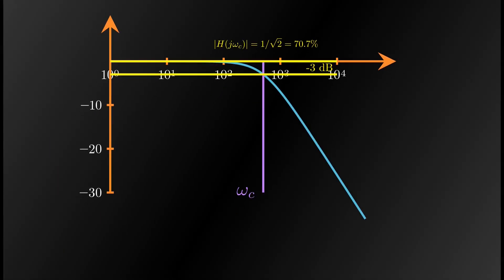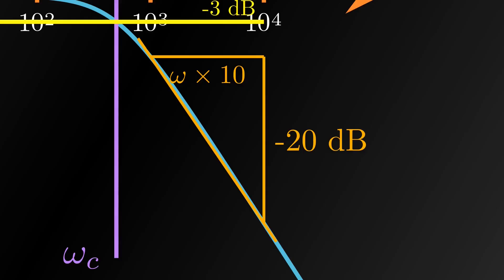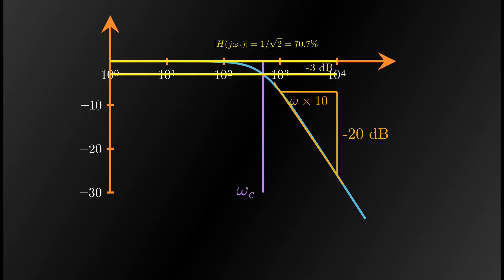How steep is the reclining slope? This is very close to a straight line, so just draw horizontal and vertical lines from the curve and measure the slope inclination. For a frequency multiple of 10, the gain decreases by minus 20 decibels. For higher order filters, it can be steeper.